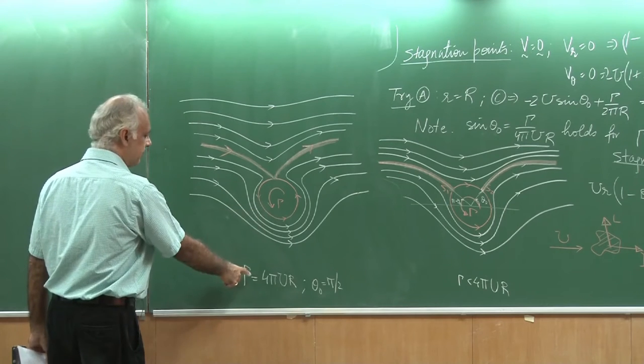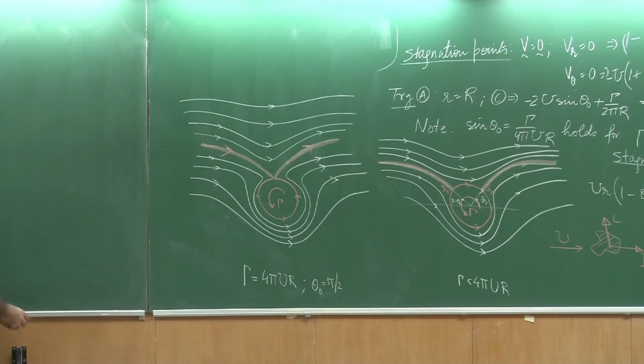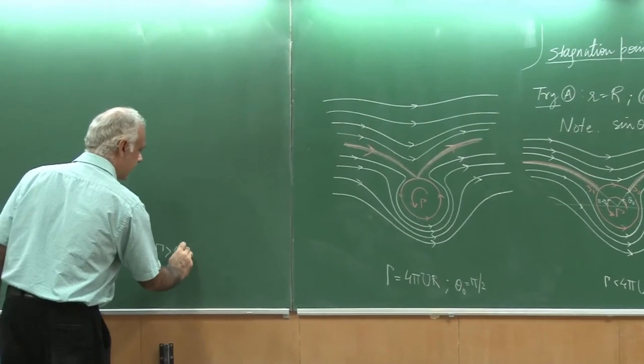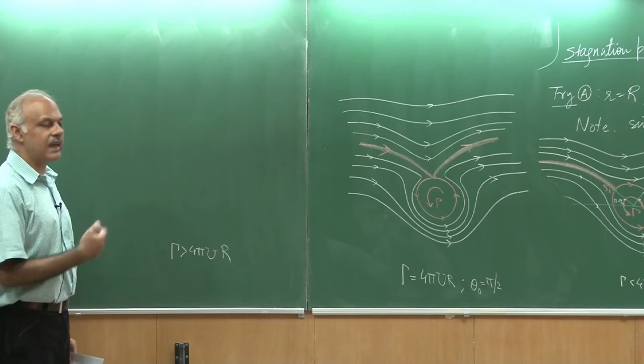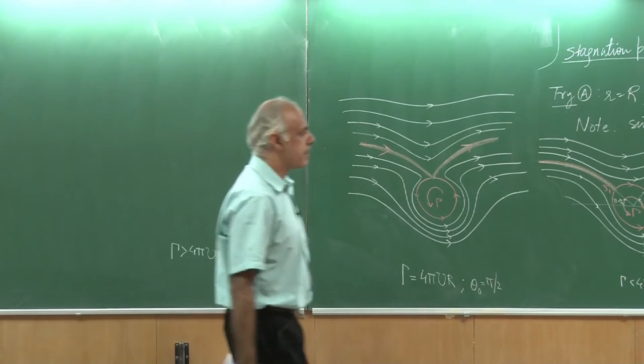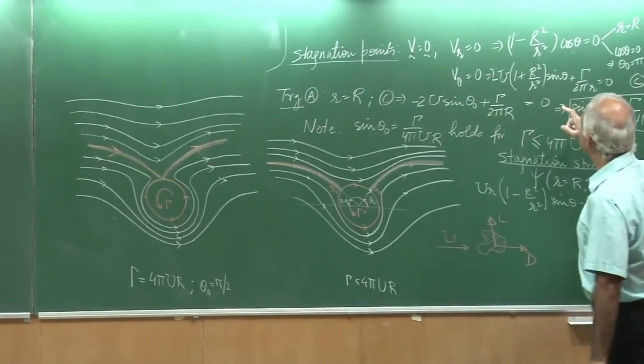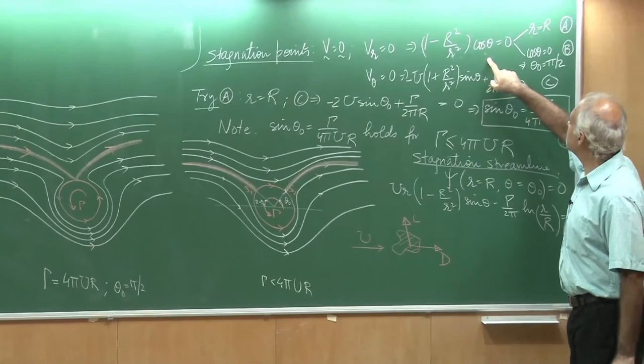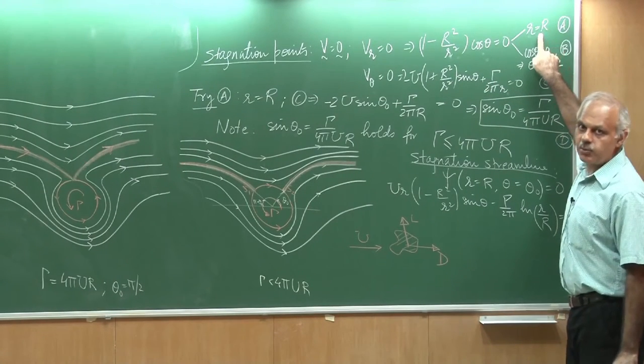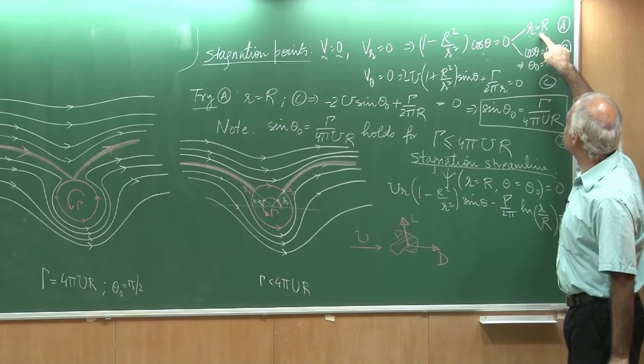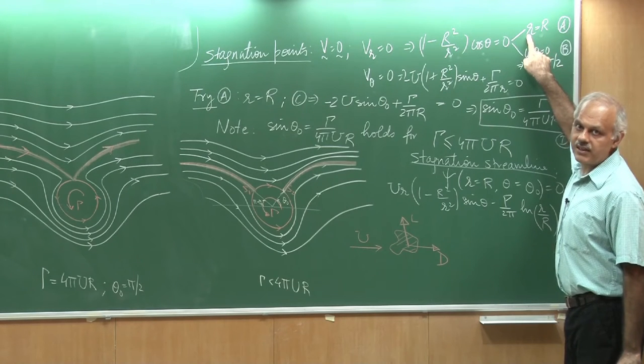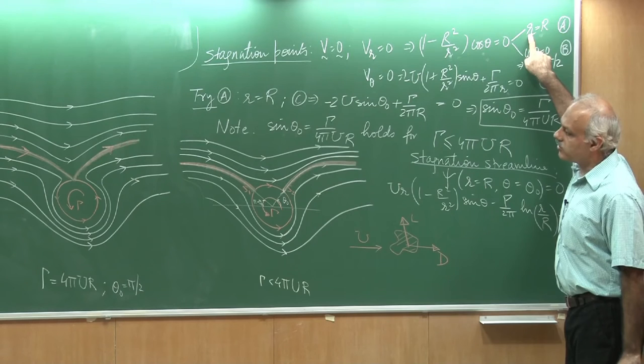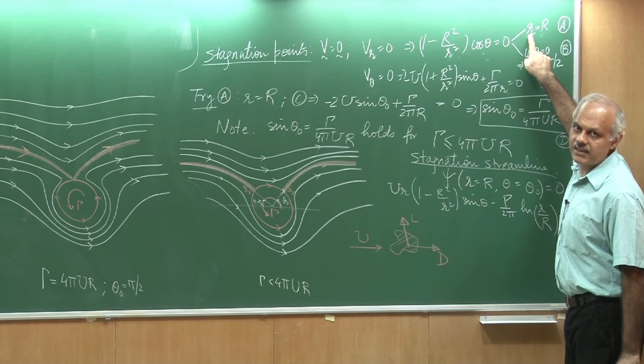Now, if we try to increase gamma beyond this value, let us try to get a hang of that. Now, I am going to get gamma greater than 4π u r. Something very interesting happens and for that, we will have to go back to our equations. Kindly notice that from the radial velocity being 0, I had 2 conditions that my stagnation point should lie either on the surface of the cylinder or my cosine θ should be 0. I will not be able to satisfy this because this condition would lead to sin θ not greater than 1. That is not allowed.